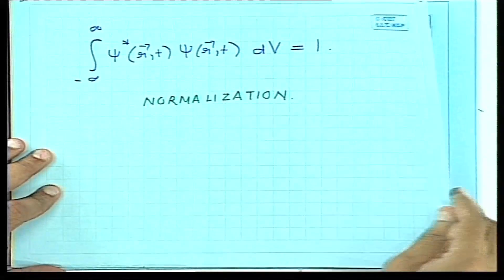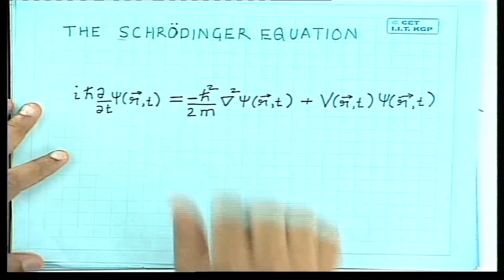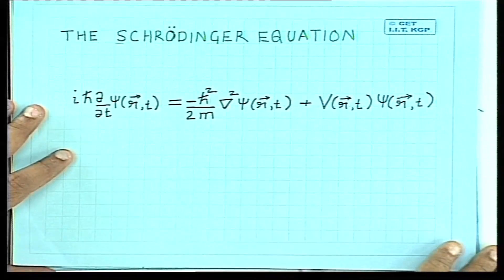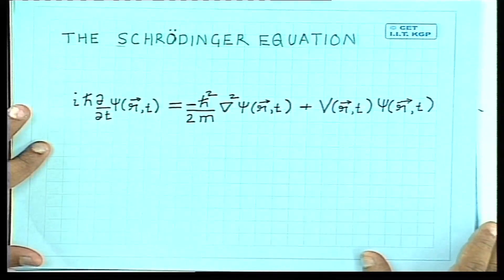Suppose I start with a normalized wave function — so the total probability of finding the particle somewhere is initially 1 — and I evolve it using the Schrödinger equation. Does the Schrödinger equation guarantee the probability remains 1? In other words, does the Schrödinger equation conserve probability?